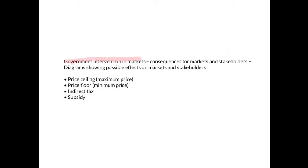When it comes to government intervention in markets, you are required to know the consequences of this intervention for the markets involved and for all stakeholders. You're also required to show diagrams illustrating the possible effects. There are four diagrams you need to be familiar with: the price ceiling (maximum price) diagram, the price floor (minimum price) diagram, the indirect tax diagram, and the subsidy diagram.